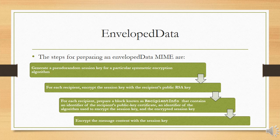The steps for preparing an envelope MIME entity are as follows: first, generate a pseudo-random session key for a particular symmetric encryption algorithm — RC2/40 or Triple DES. Second, for each recipient, encrypt the session key with the recipient's public RSA key. Third, for each recipient, prepare a block known as RecipientInfo that contains an identifier of the recipient's public key certificate, an identifier of the algorithm used to encrypt the session key, and the encrypted session key. Finally, encrypt the message content with the session key. The RecipientInfo blocks followed by the encrypted content constitute the envelope data, which is then encoded into Base64.